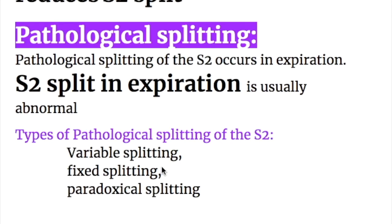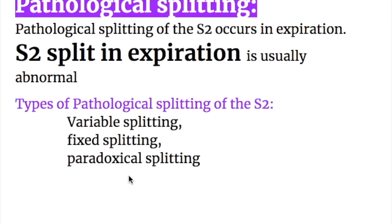Pathological splitting of the second heart sound occurs in expiration, and S2 split in expiration is usually abnormal. Types of pathological splitting include: number one, variable splitting; number two, fixed splitting; and number three, paradoxical or reverse splitting.